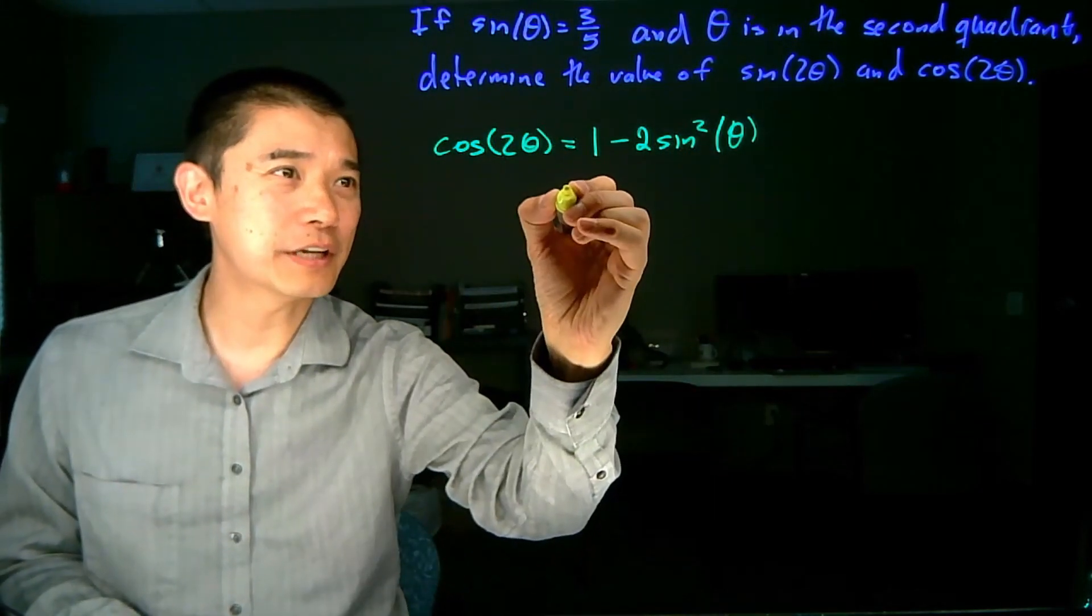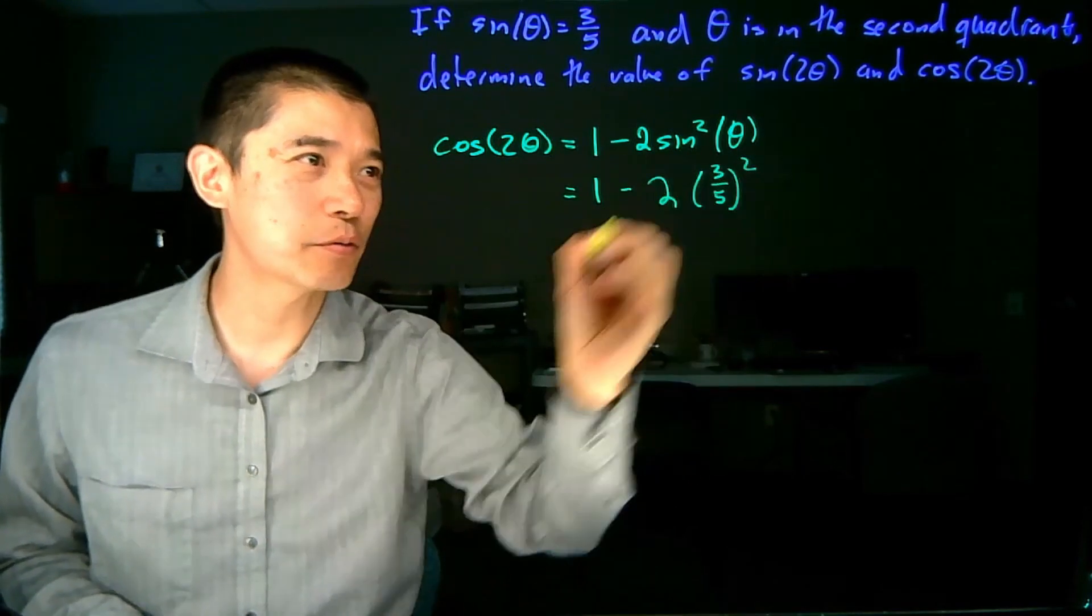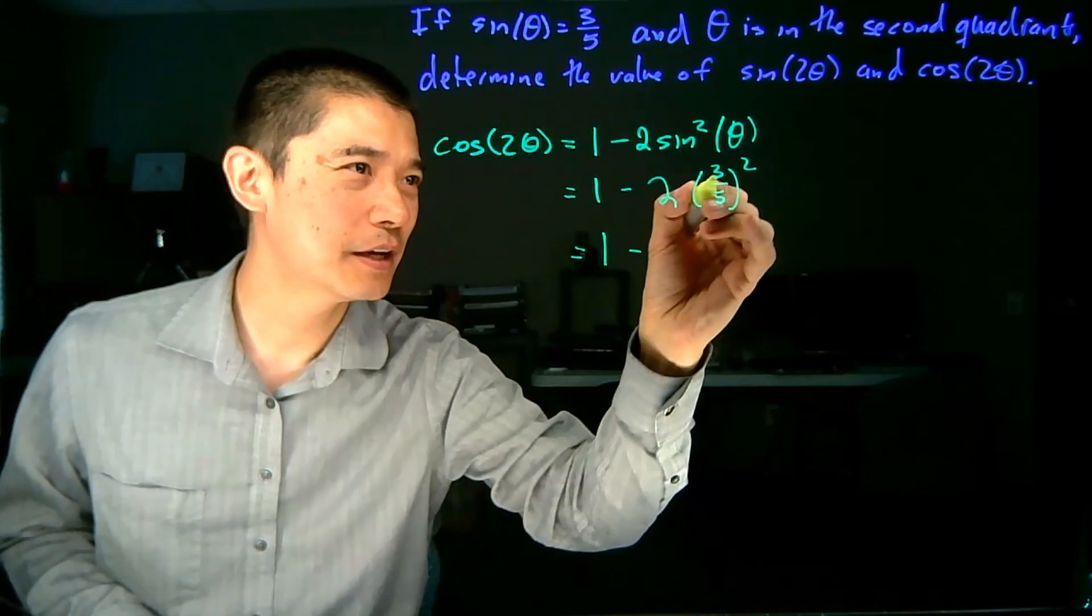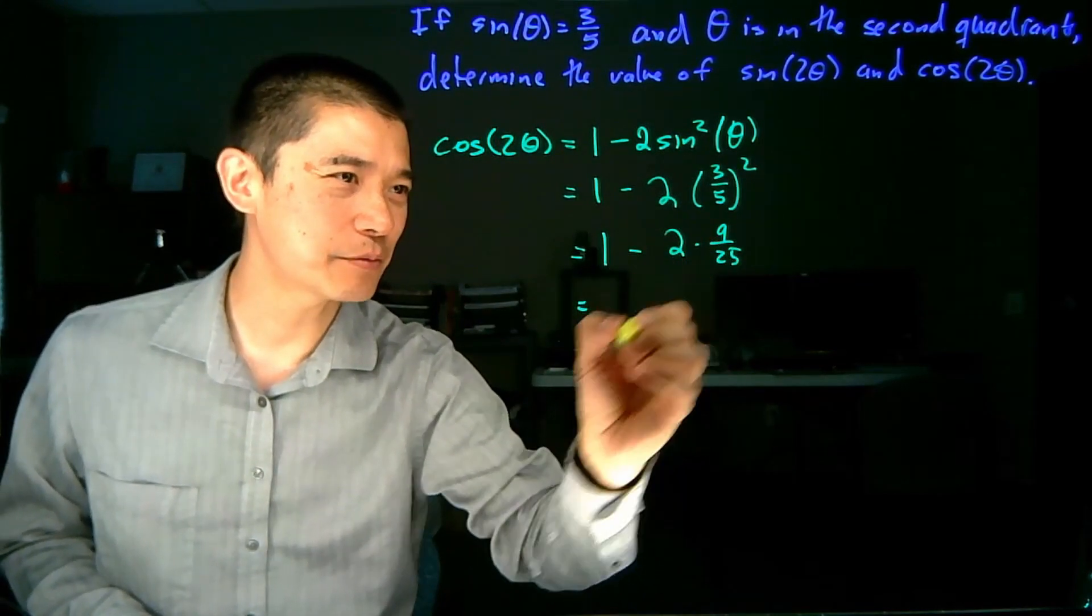And so in this case, we're going to have 1 minus 2 times 3/5 quantity squared. And we just have to do the fraction arithmetic correctly. 3/5 squared is 9/25. 2 times 9/25.